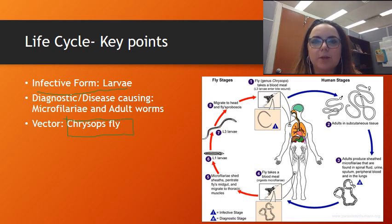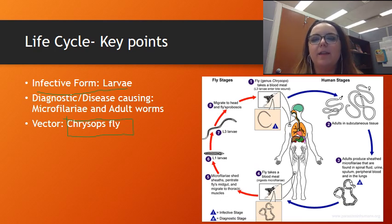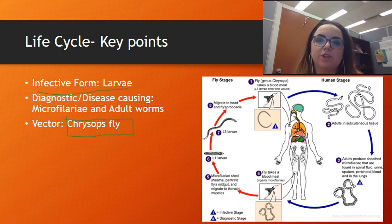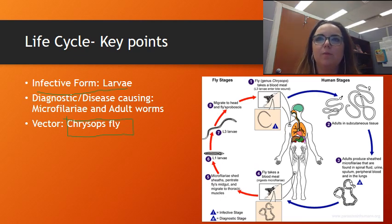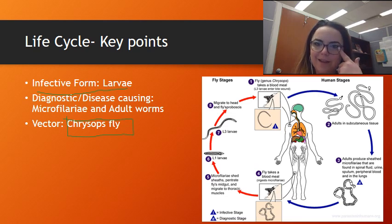Once in the subcutaneous tissue they multiply and mate, and following mating they develop into microfilariae and eventually adult worms. The microfilariae can be found in all sorts of tissues — spinal fluid, urine, sputum, peripheral blood, the lungs, muscle — and one of the places I associate most with this parasite is the eyeball.